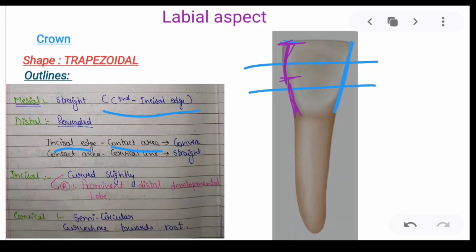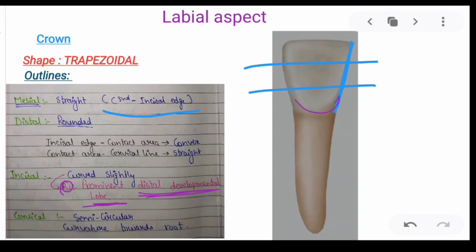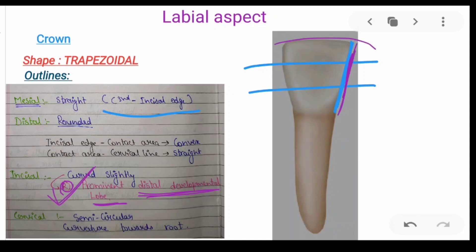Coming to the incisal outline: it is curved slightly, but overall it appears straight. The reason we see the curved incisal aspect is because of the prominent distal developmental lobe. The cervical line is semicircular — not like that of the mandibular central incisors which have a curved cervical outline. This semicircular cervical outline of the labial aspect is curved towards the root.